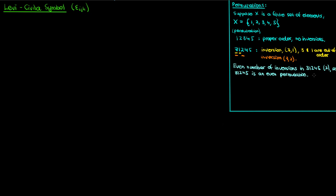What if I have an arrangement or permutation given by 4, 1, 2, 3, 5? In that case, I now have three inversions: 4 and 1, 4 and 2, 4 and 3. And since 3 is an odd number, we say that this is an odd permutation.